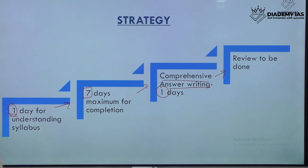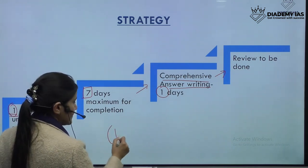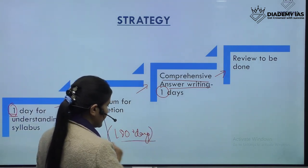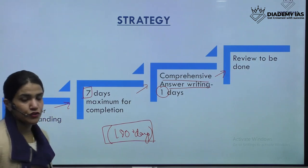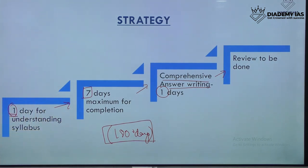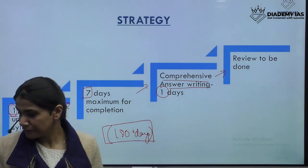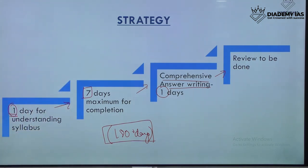Within 180 days, if you are doing the right approach under the right guidance, you will complete your entire management optional syllabus, including all answer writing simultaneously, full revision, and mocks based on previous year questions.